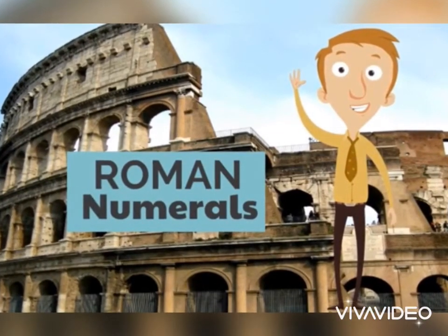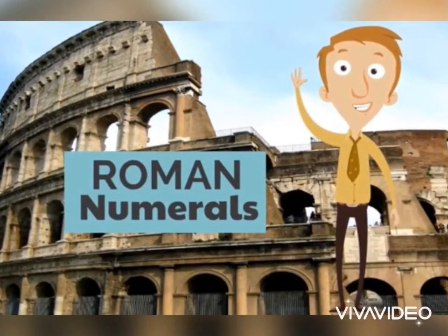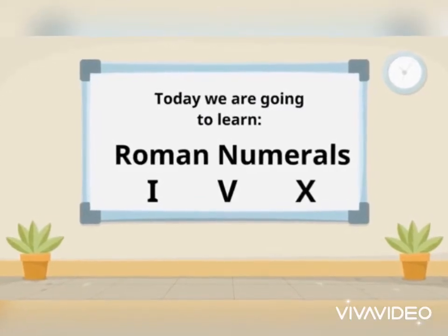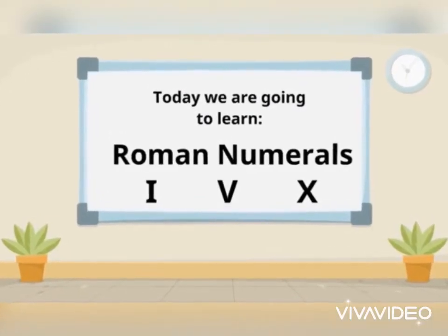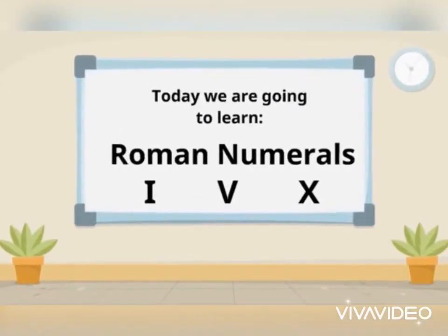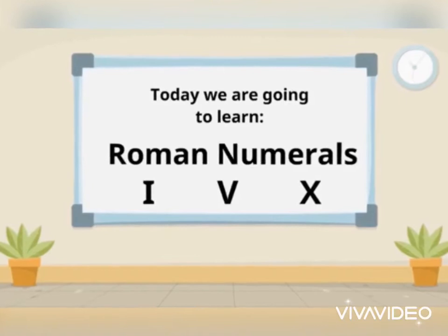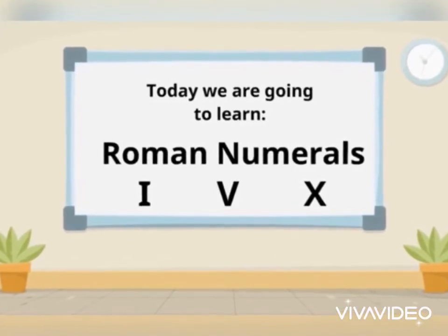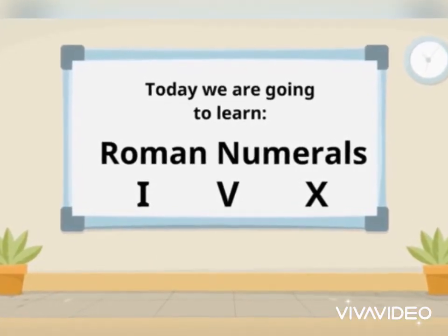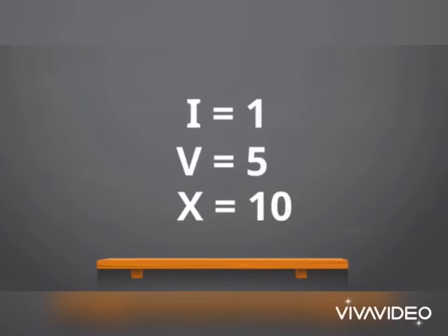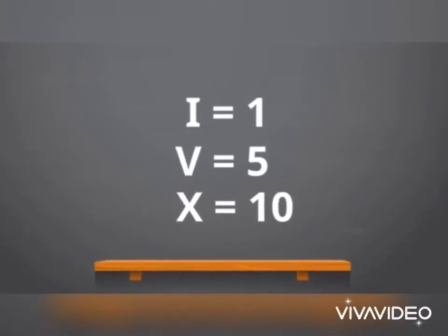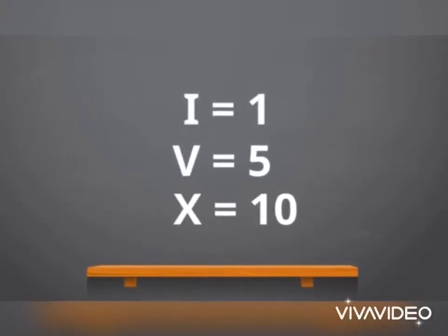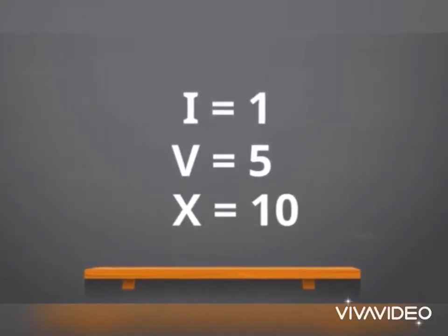A Roman numeral is a number system in which numbers are represented by letters like I, V, X, L, C, D, and M. But in this video we are going to learn about I, V, and X only.